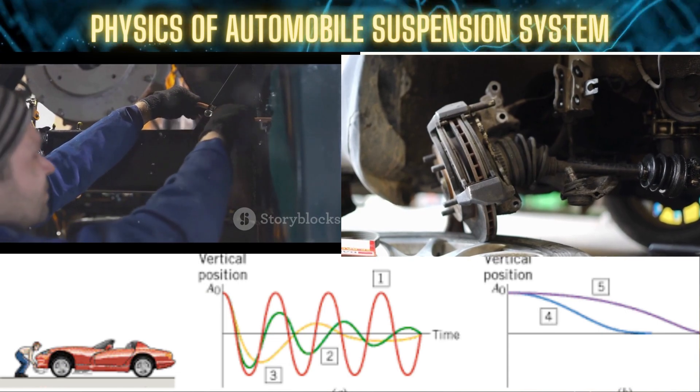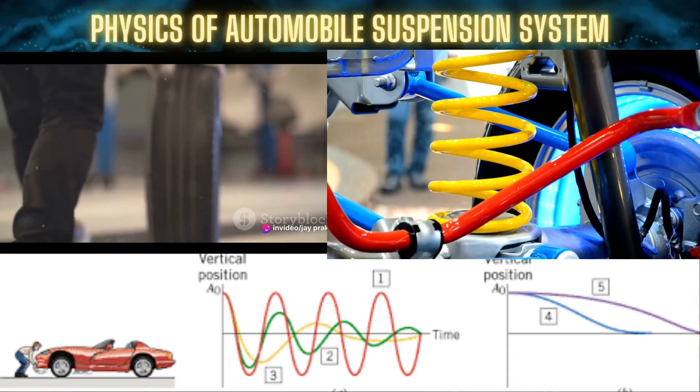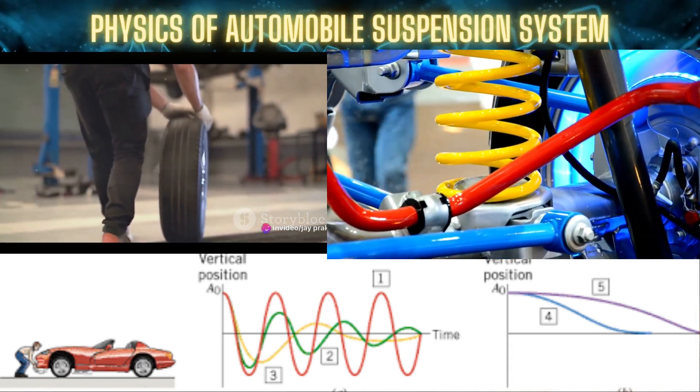Imagine a car suspension system as a spring. If the spring is underdamped, it's like a pogo stick, bouncing up and down with each bump in the road. This can lead to excessive oscillations, making for a pretty bumpy ride.